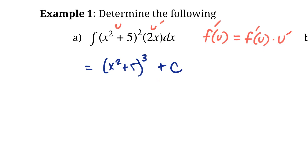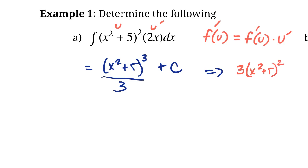So it looks very close already, but what's missing? Well, we'd have to bring that 3 down. So in order to get rid of that 3, why don't we divide the whole thing by 3 as well? If we do that, let's try to take the derivative. The derivative is going to be 3(x² + 5)² over 3, times the derivative of the inside, 2x. Those 3s cancel out and we got it.